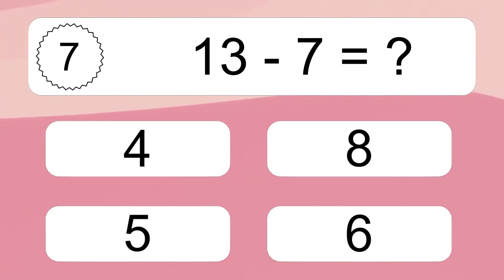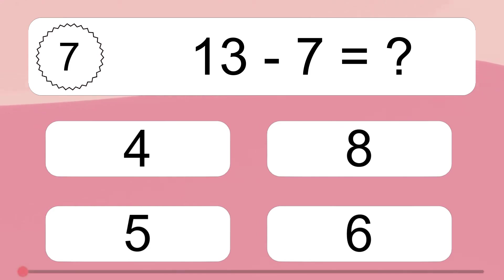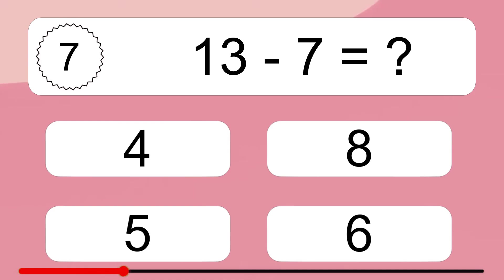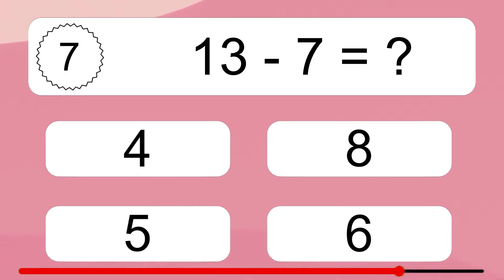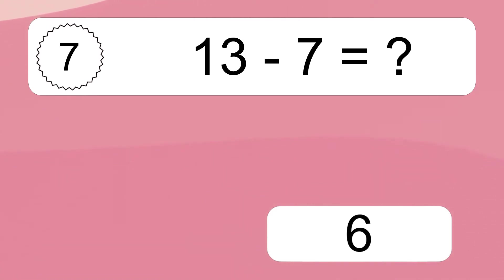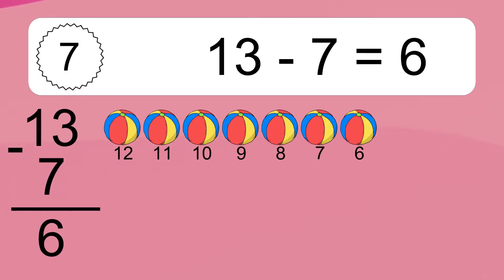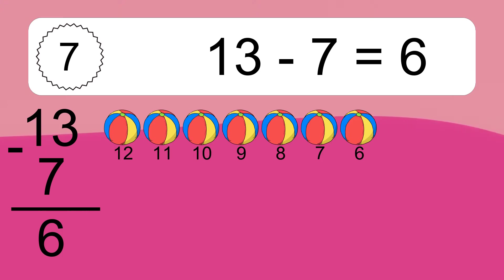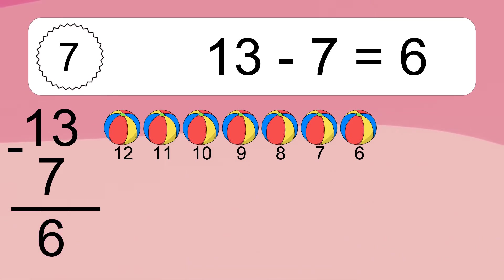13 minus 7 equals what? 13 minus 7 equals 6. Let's count it: 12, 11, 10, 9, 8, 7, 6.